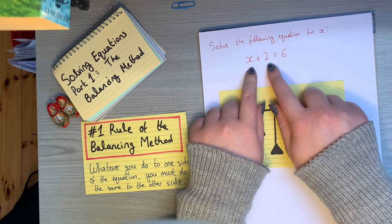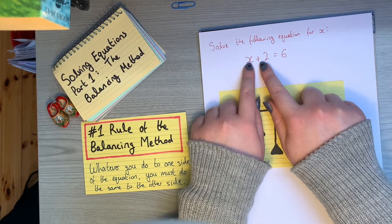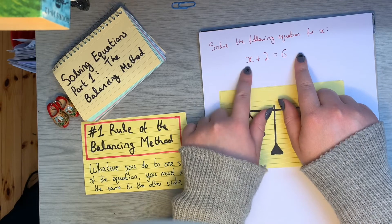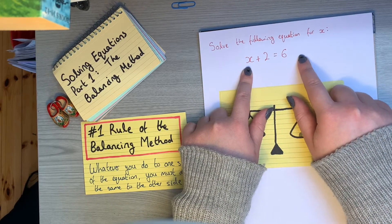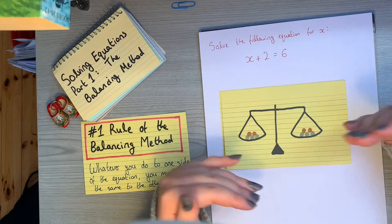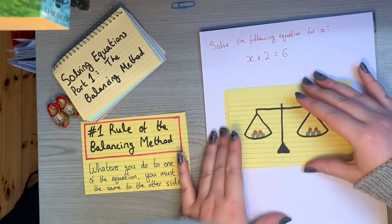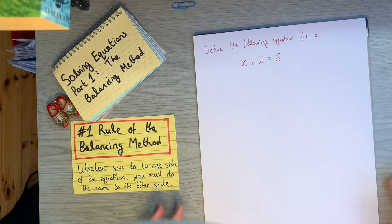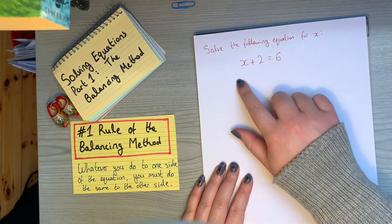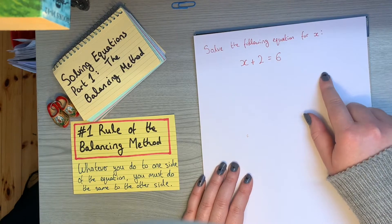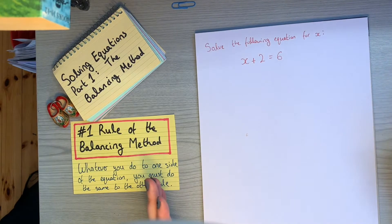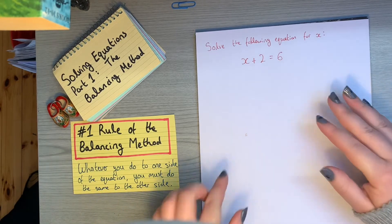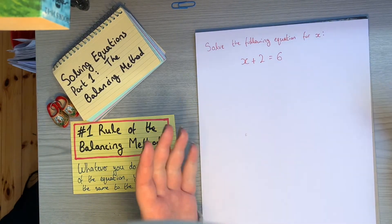So that's what we call the balancing method. Whatever we do to one side of the equation, we have to do the same to the other, because an equation is a relationship. This equal sign is telling me that this side is equal to this side. So if I add 2 to one side, I have to add 2 to the other to keep it balanced. We have to be strategic about it — I could add 100 to both sides and it would be balanced, but I'd be no closer to finding x.